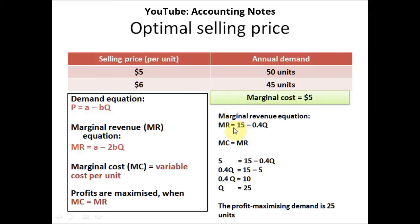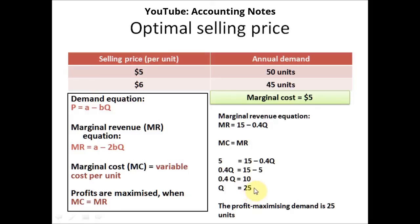Now that we have our marginal revenue equation, we know that profits are maximized when marginal cost equals marginal revenue. The marginal cost is $5, so we set MC equal to MR: 5 equals 15 minus 0.4Q. We bring 0.4Q to the left and 5 to the right: 0.4Q equals 15 minus 5, which is 10. To get Q, we take 10 divided by 0.4, which gives us 25. So Q equals 25 — the profit-maximizing demand is 25 units.